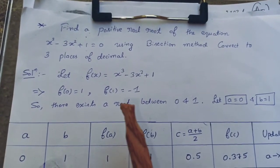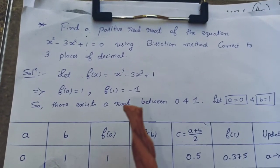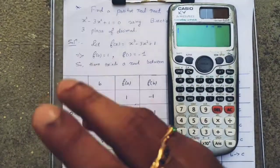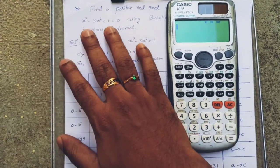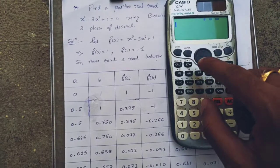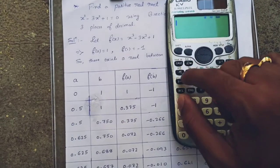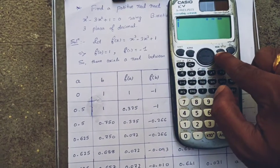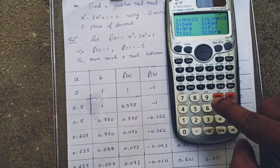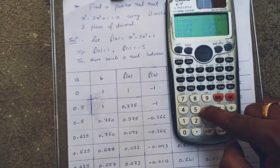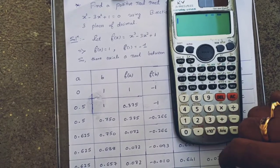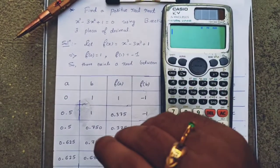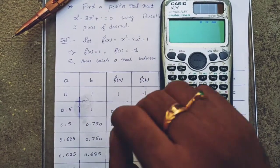Next, fix the number of decimal places to 3 in the calculator. First press Shift, then Setup, then Fix, then 3.